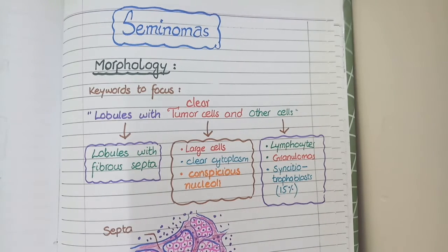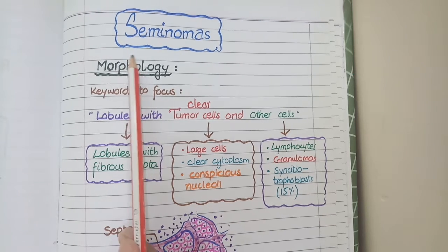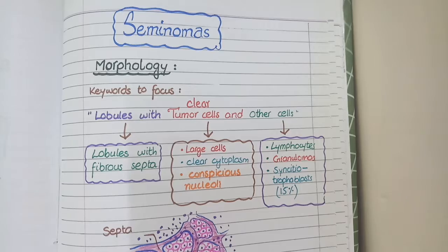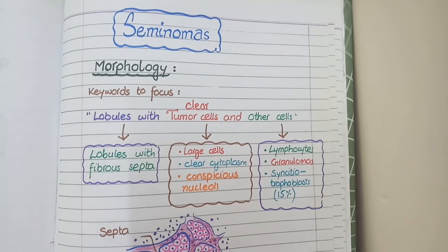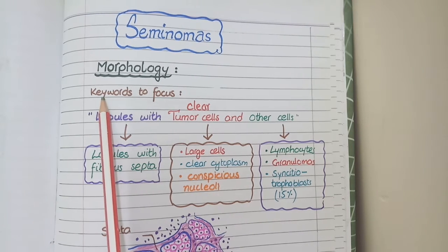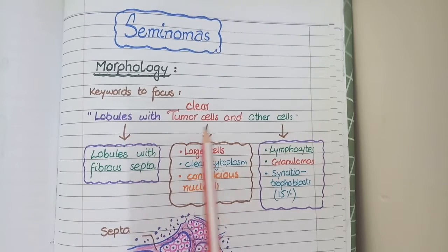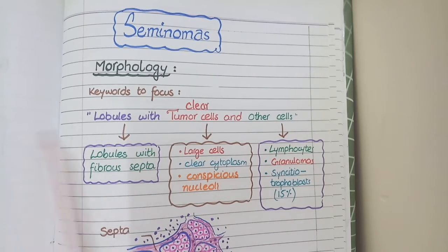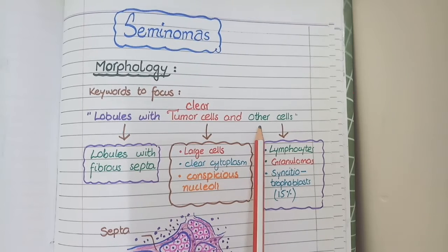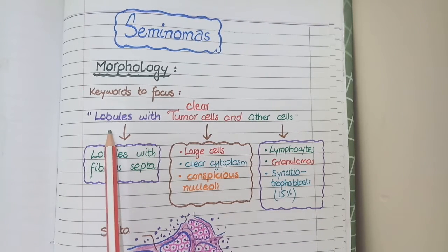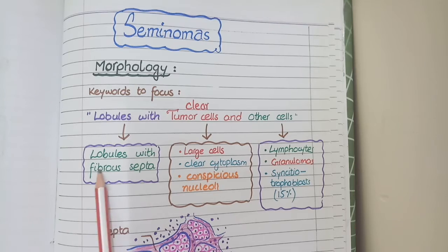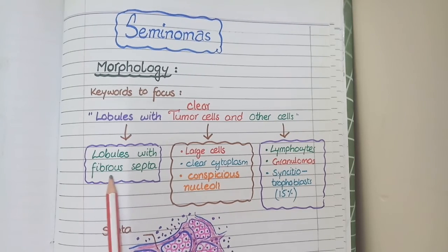We will now discuss the pathology of each testicular cancer. Seminomas are the most common type of testicular tumor; all other categories are classified as non-seminomatous tumors. For morphological features of seminomatous tumors, the keywords are: lobules with clear tumor cells and other cells. The tumor mass is composed of multiple lobules separated by fibrous collagenous septa.